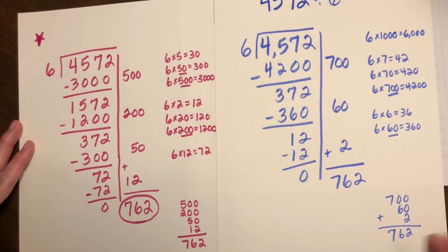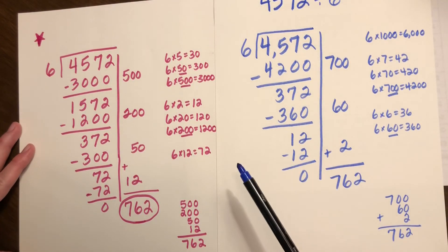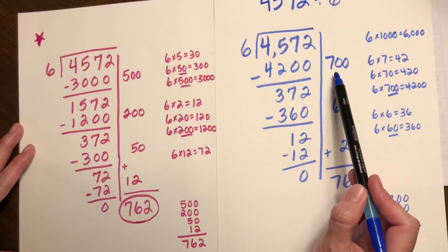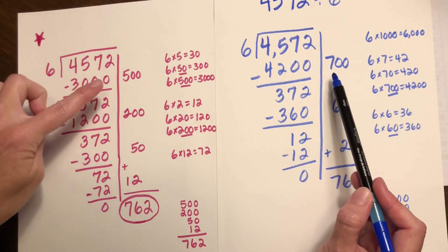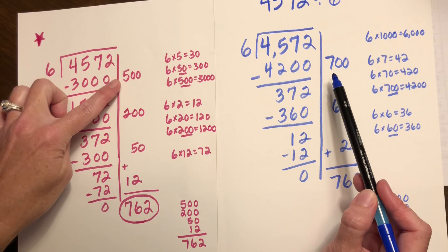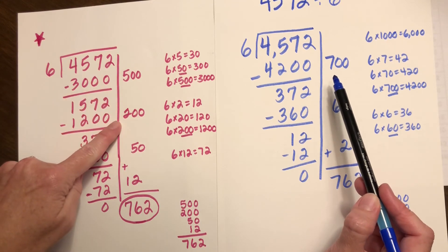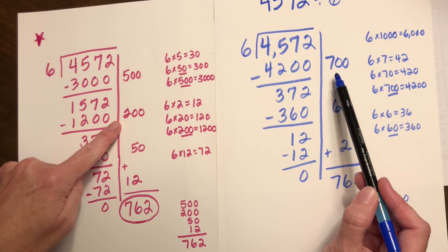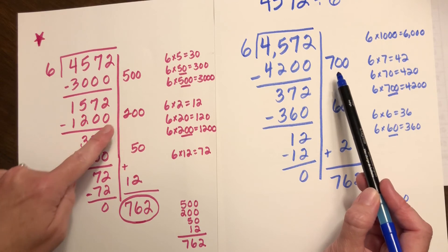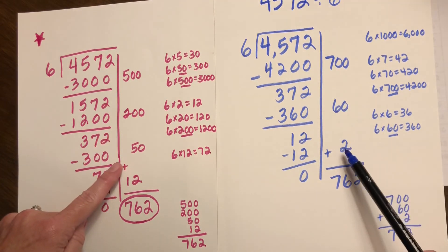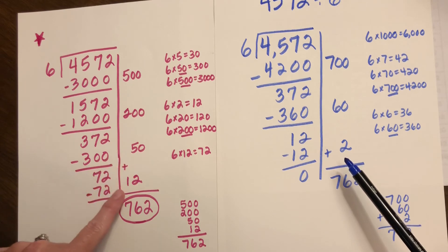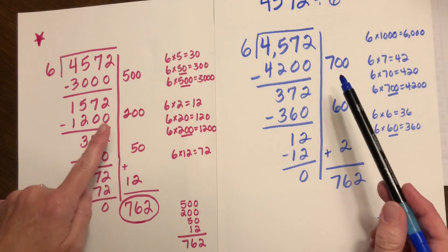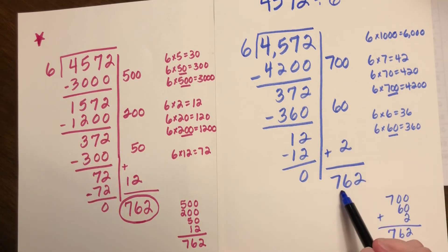So once again let's look at how we can use different friendly numbers. In this example I use 700 but you can also break that down to 500 and 200. So again whatever friendly numbers work for you, this can work in the partial products method. Instead of 60 and 2, this example shows 50 and 12. Both methods show the answer of 762.